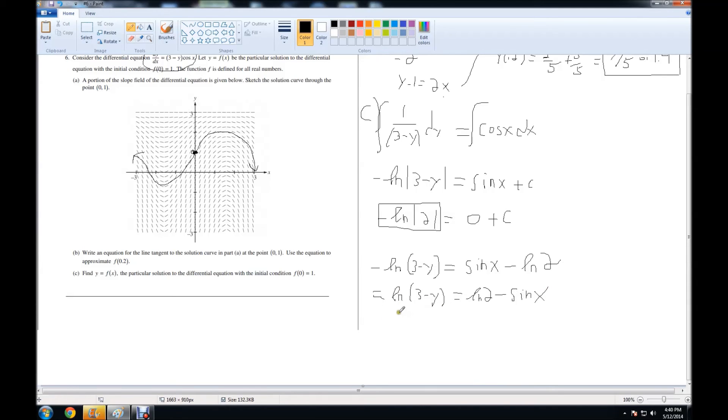To cancel out the natural log, I'm going to put a base of e and raise whatever we have as a power to e. E's and natural log cancel, so you're left with (3-y) equals—now here, since we have a minus sign, we can actually split this into a fraction, because if you remember your exponential properties, this is also equal to e to the natural log of 2 divided by e to the sin(x).